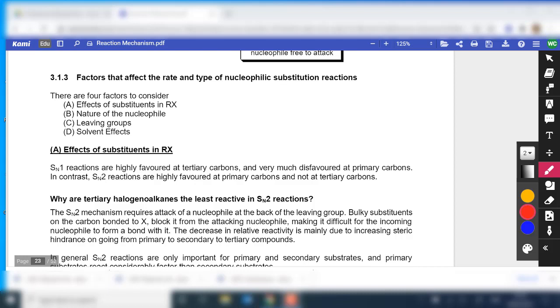First of all, it's the nature of the substituent, or we call it the substrate effect. This is followed by the nature of the nucleophile, good or strong nucleophile, and you learn about the correlations or whether there's a direct correlation between basicity and nucleophilicity and the nature of the leaving group as well.